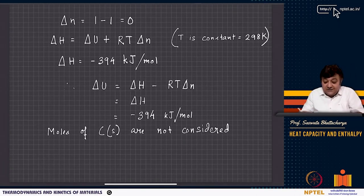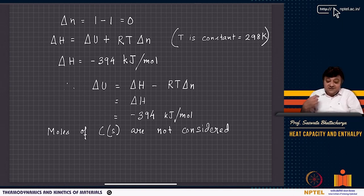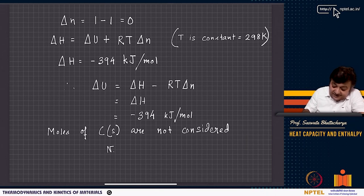If delta N were not zero, delta U and delta H would differ. For example, in N₂ + 3H₂ → 2NH₃, all species are gases. Products have 2 moles and reactants have 4 moles, so delta N = −2, giving a difference between delta U and delta H. You can find such examples yourself.